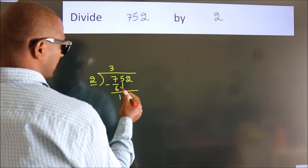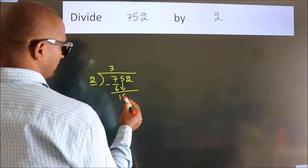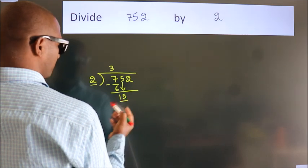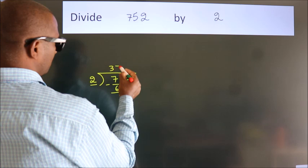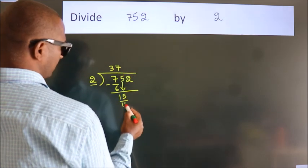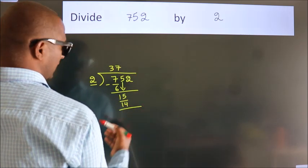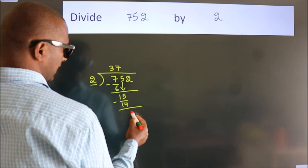bring down the beside number. So, 5 down. So, 15. A number close to 15 in 2 table is 2 sevenths, 14. Now, we subtract, we get 1.